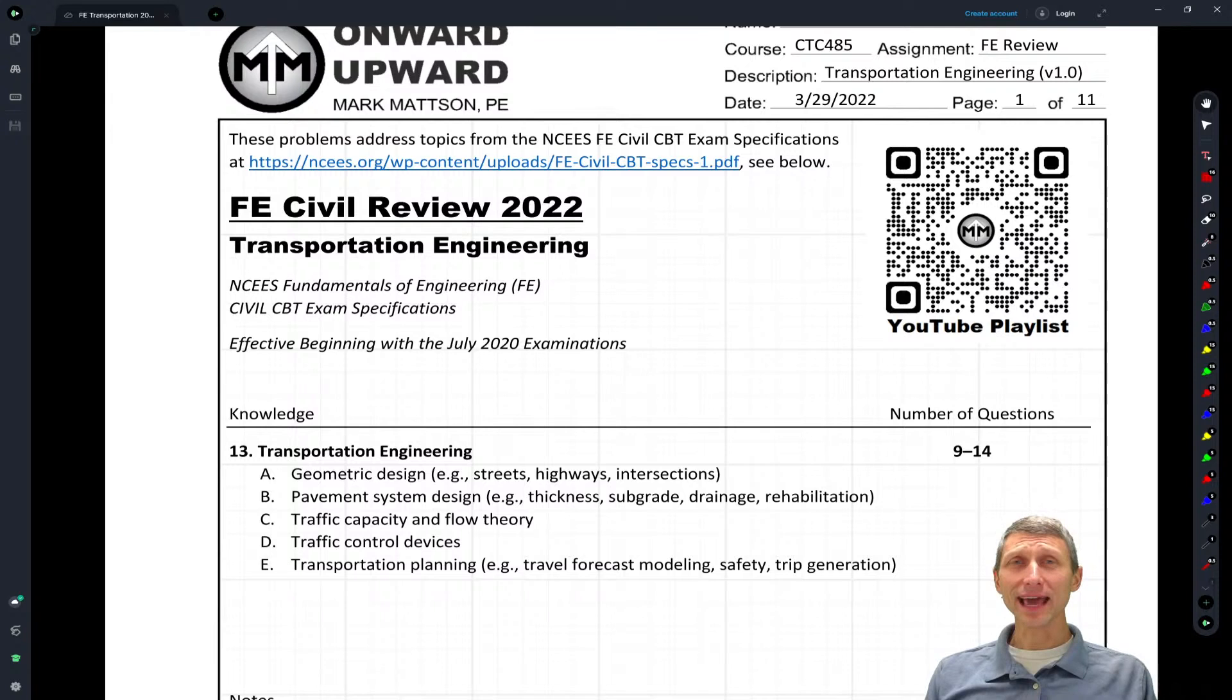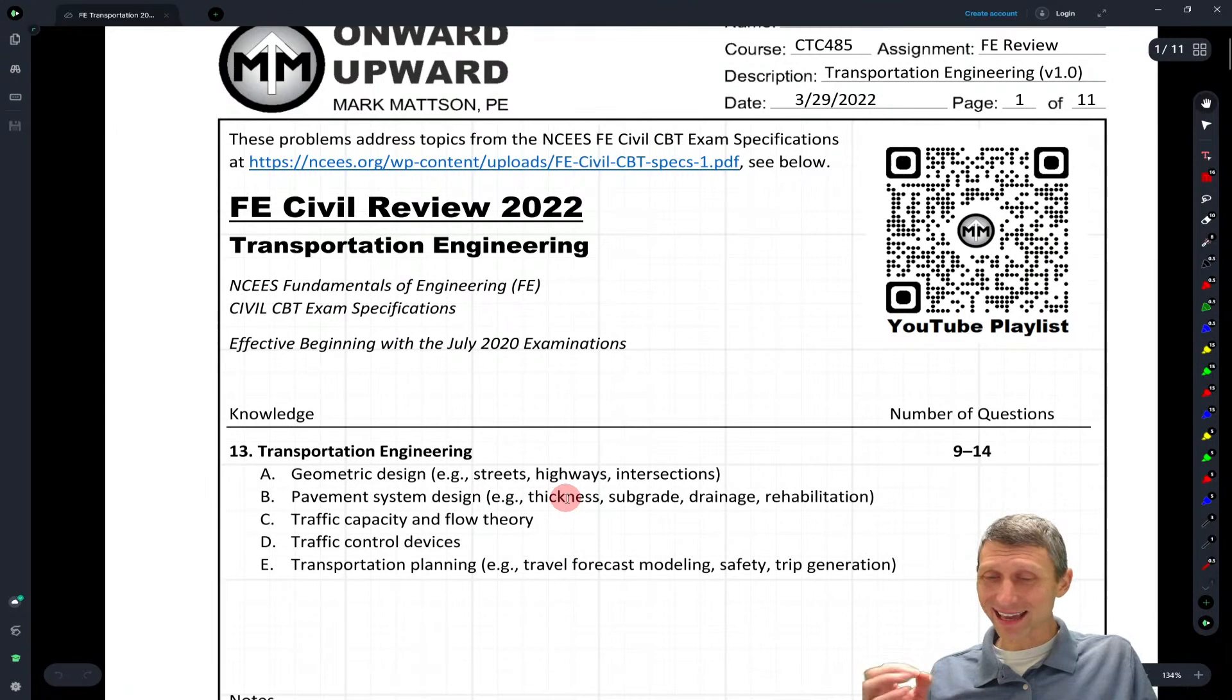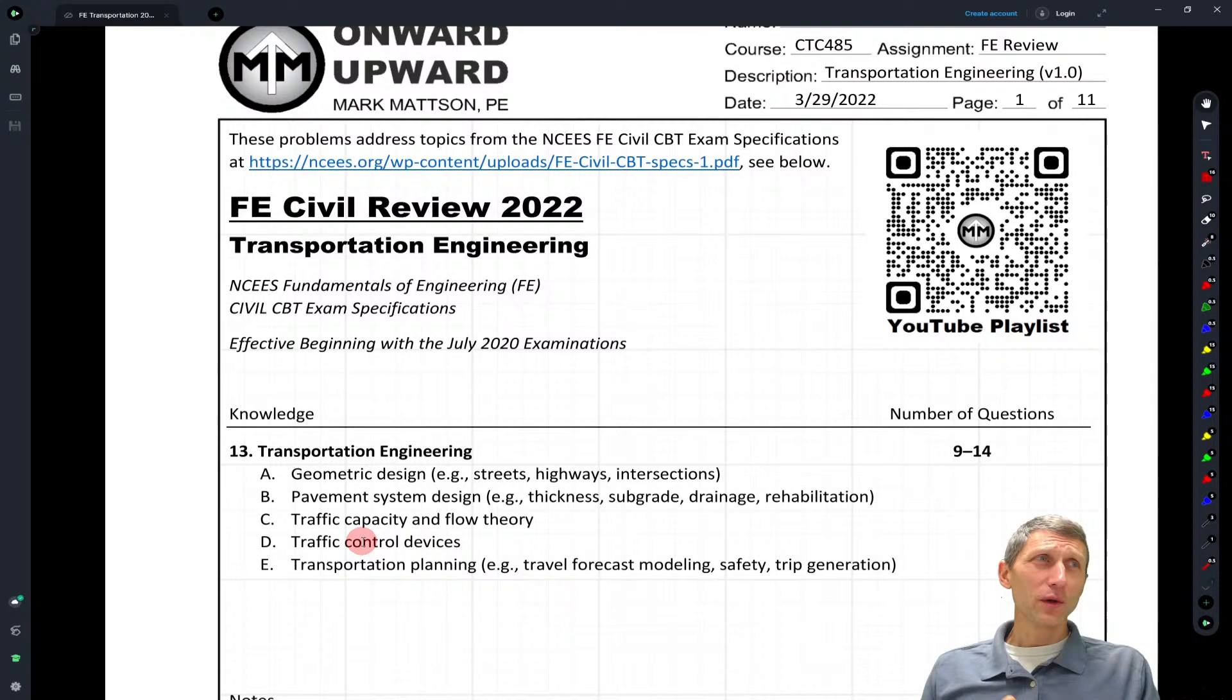Actually, the FE review handbook does a good job of sort of paring it down. If you're looking at the highway capacity manual, that book is just loaded with formulas. So we're going to get into some of those. We're going to hit some with the geometric design, pavement systems - I don't hit pavement systems too hard in this review. Traffic capacity and flow theory, I do get into. Traffic control devices, I get into a little bit with timing as well. Hopefully we can get through all of that.